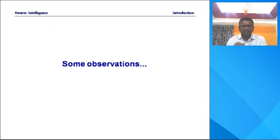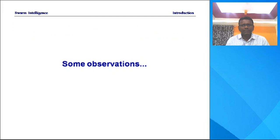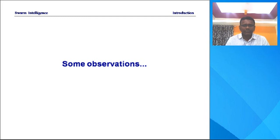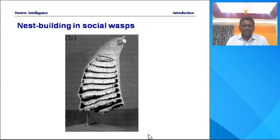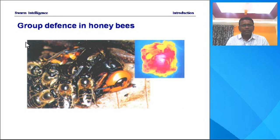Now some observations. The next few slides will give you some idea of how this nature, how these biological insects or biological systems, are useful for Swarm Intelligence. You can see here the nest building in social wasps — how the nests are built by these wasps. Then group defense in honeybees. Then ants — why are ants interesting? Because ants solve complex tasks by simple local means. Ants' productivity is better than some of their single activities. Ants are grandmasters in search and exploration.